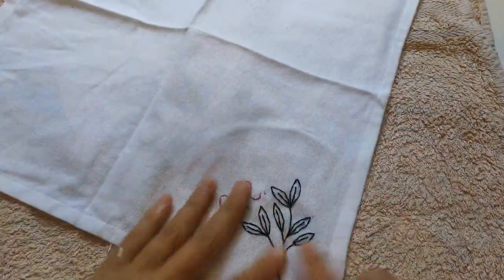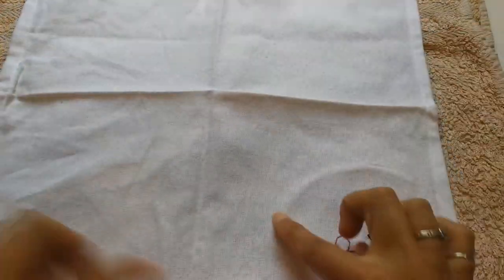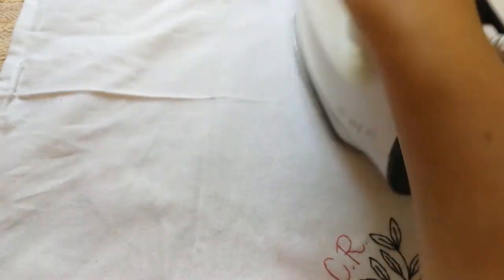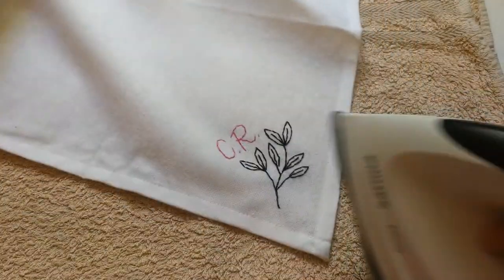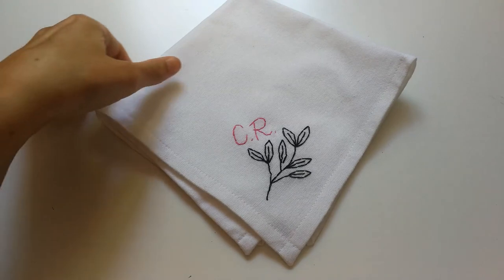The final step is to iron it. Ironing gets rid of any leftover ink marks that you can still see and gets rid of the little mark left by the hoop. And you're done.